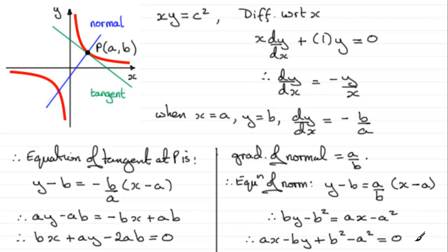All right, so hopefully that just gives you the general form of the equation of a tangent and the equation of a normal at a general point P, with coordinates A and B, when it's given in Cartesian form.